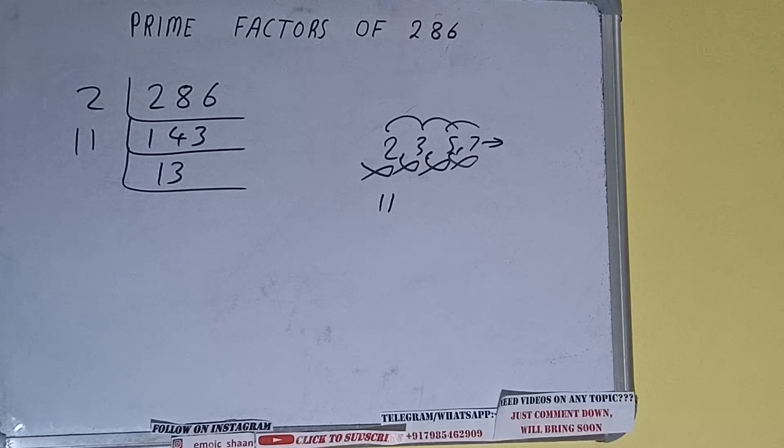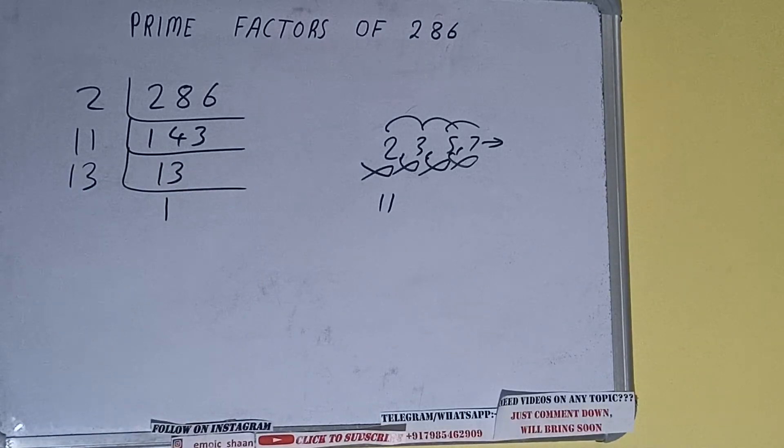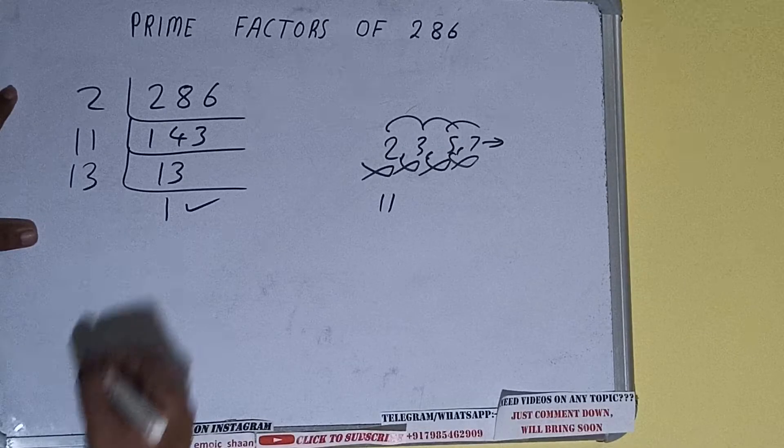11, and on that, 13 is also a prime number, so it is only divisible by itself, that is 13. And once we do so, we will be getting one. Once we get one, we need to stop and do